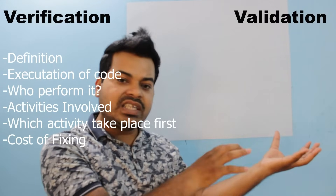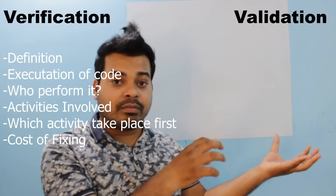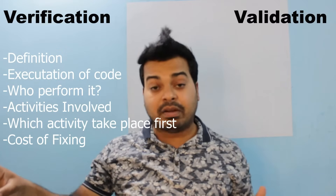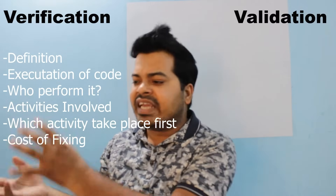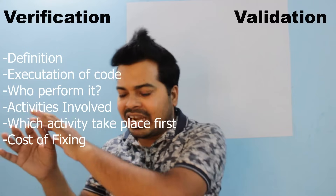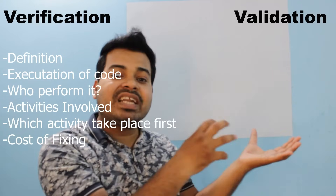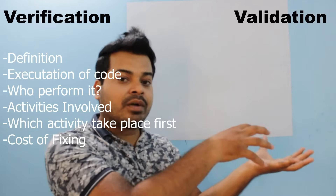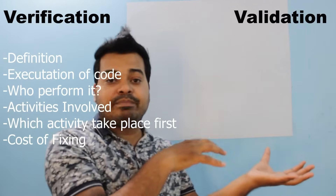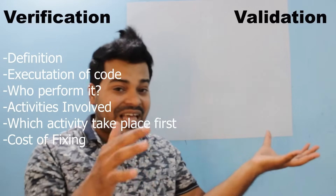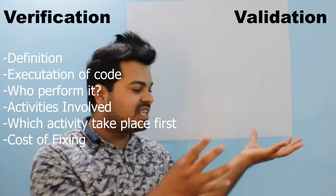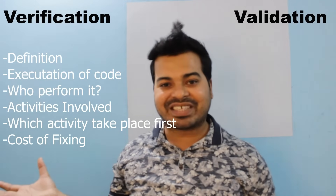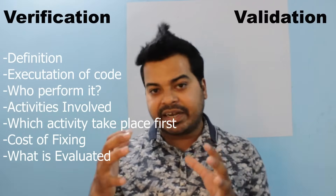In validation, the developer has given the code to the tester. The tester tests the application by executing test cases. If a defect is found, a bug is raised and given to the developer. The developer fixes it, does white box testing again, and gives it back to the tester. The tester then verifies whether the bug is fixed and checks if that bug is impacting other features. That is why the cost of fixing a defect in validation is more compared to verification.